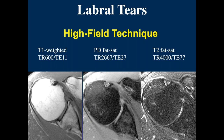Some people like a T2 fat suppressed sequence — it makes fluid brighter and you can see cortical margins, but you lose a lot of signal to noise. Even going to a higher TR to recover signal, you end up with noisier images. You get a more black-and-white image with high contrast but lose a lot of the grayscale information within the soft tissues.